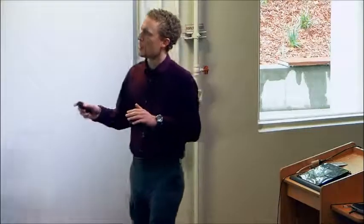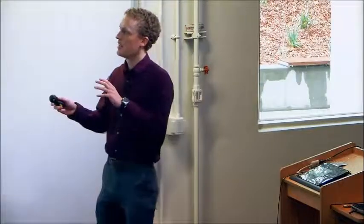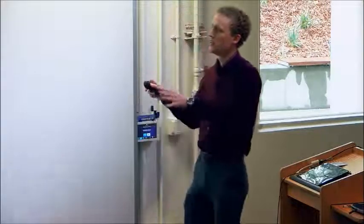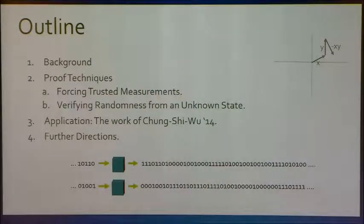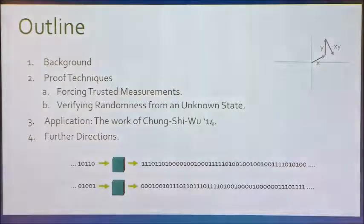The main goal of this talk is to communicate the techniques. I'll start by giving some background on quantum random number generation, talk about what was already known before, and then talk about the techniques we use to get our results. They split naturally into two categories: since we're doing device independence, we need to handle measurements and we need to handle states. These are basically fairly independent techniques, and the main body of the talk will cover those two parts.